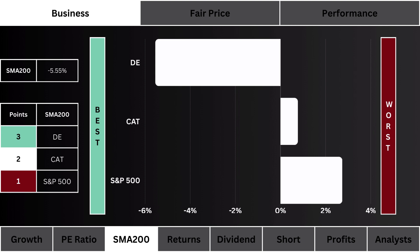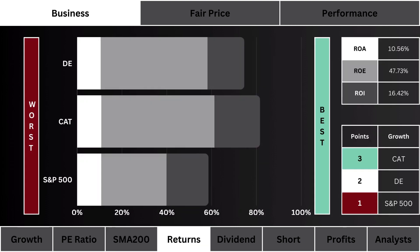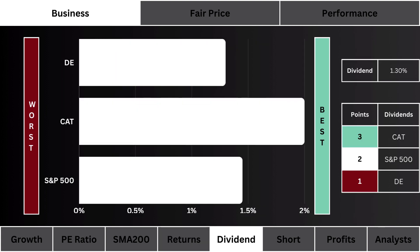For returns, what you see here is the ROA, ROE, and ROI of the three stocks. We want to figure out which stock is using its assets, cash, and investments most efficiently. The greater the overall return, the more efficient the stock's business.